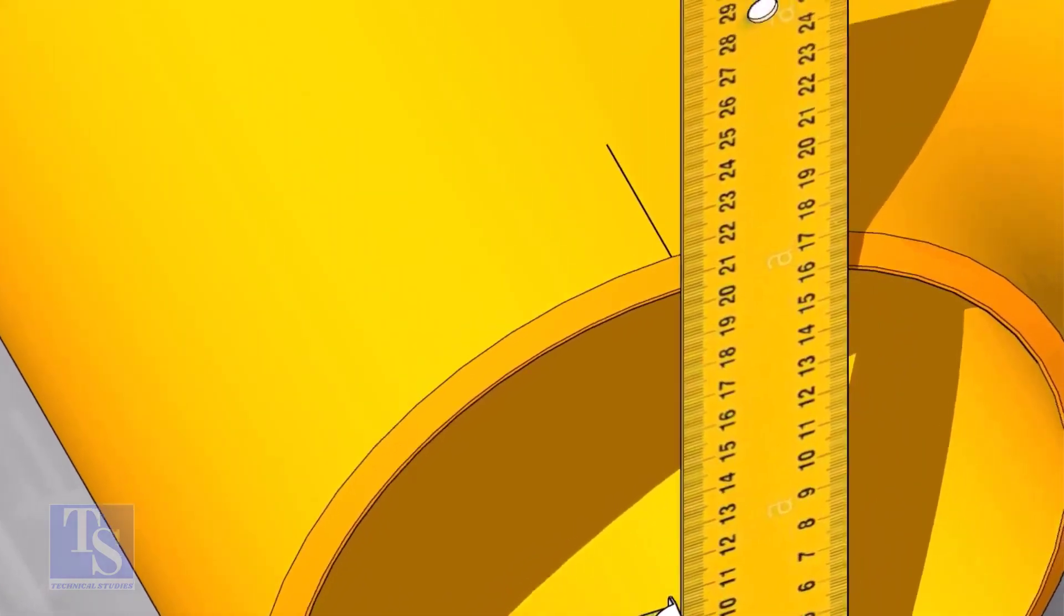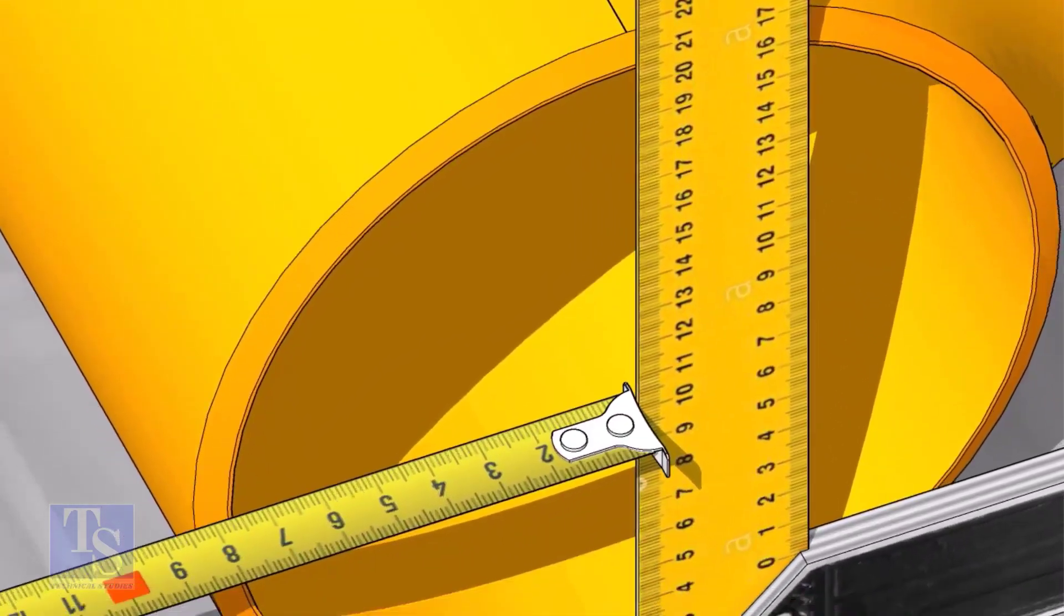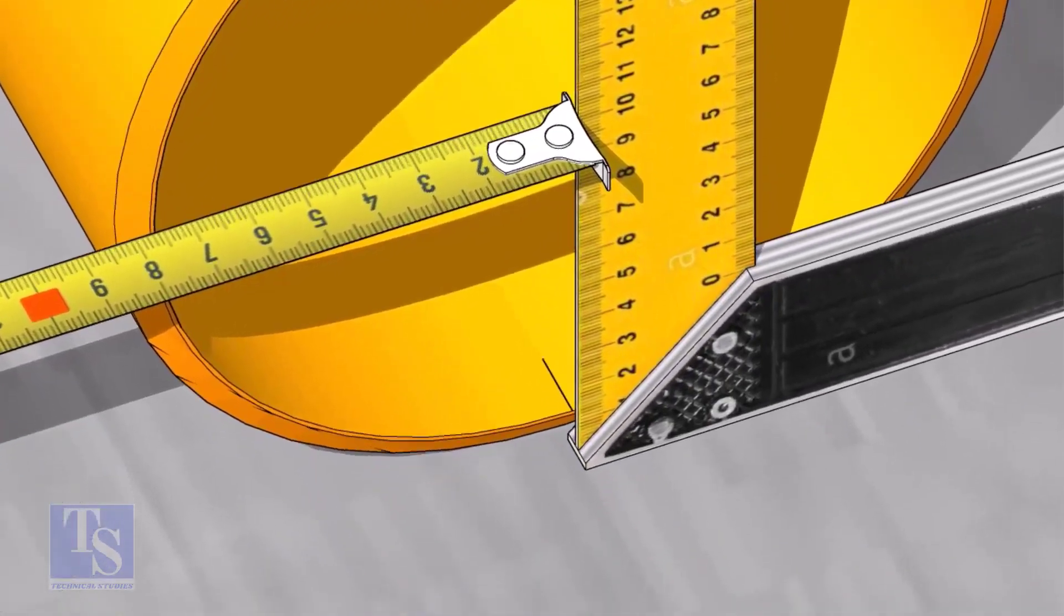Draw lines on the top and bottom face of the tee as shown. The line at the bottom shall be transferred to the outer face of the tee later.